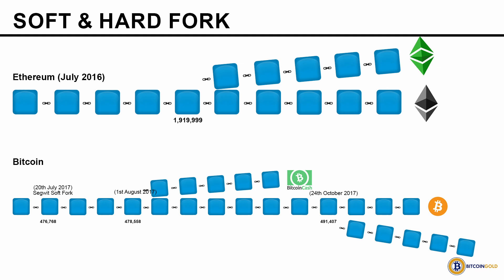Not every hard fork results in a chain split. If everyone had agreed to increase the block size to 8 megabytes, there would be only one chain — the upgraded one. The term 'fork' refers to software forking, not forking the chain. Hard fork is also a common term in GitHub, referring to making a copy of software. In general, a fork is a copy of software, not a copy of the chain.